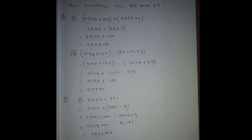Next problem. 7909 into 98 plus 7909 into 2. Make common: 7909 into (98 plus 2), which equals 7909 into 100, equal to 7,90,900. Number 4: 7909 into 97 equals 7,90,900 minus 7909.